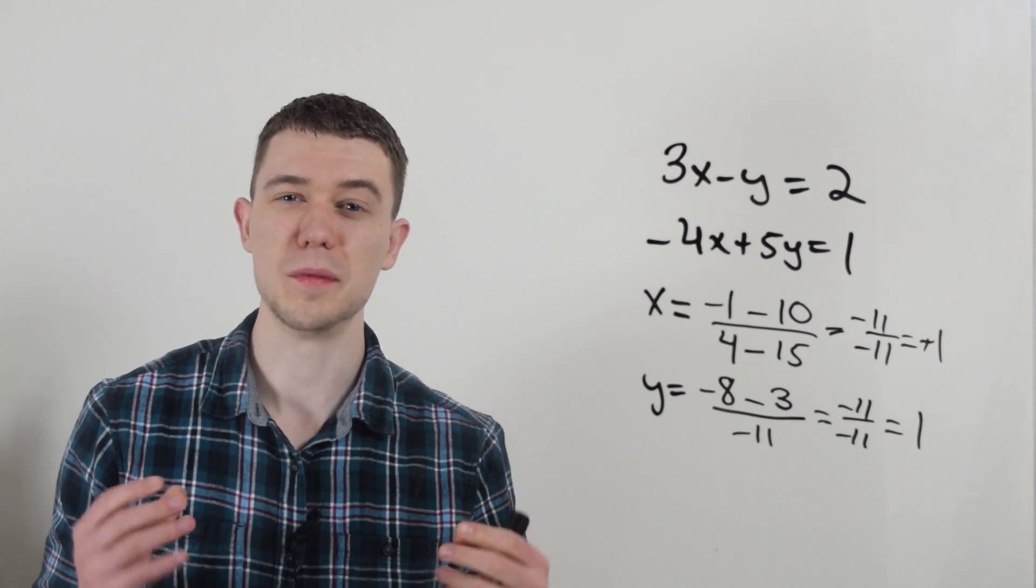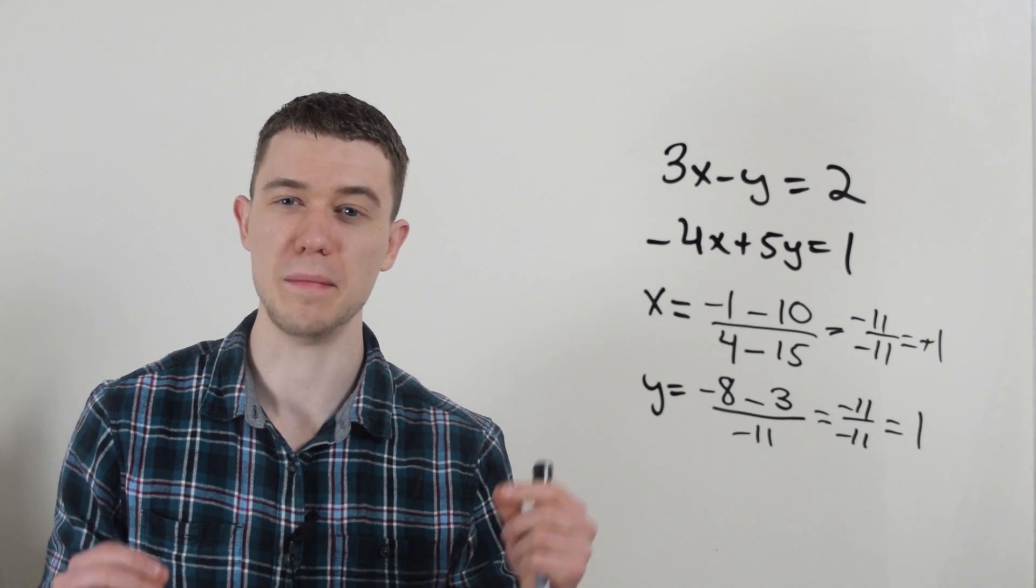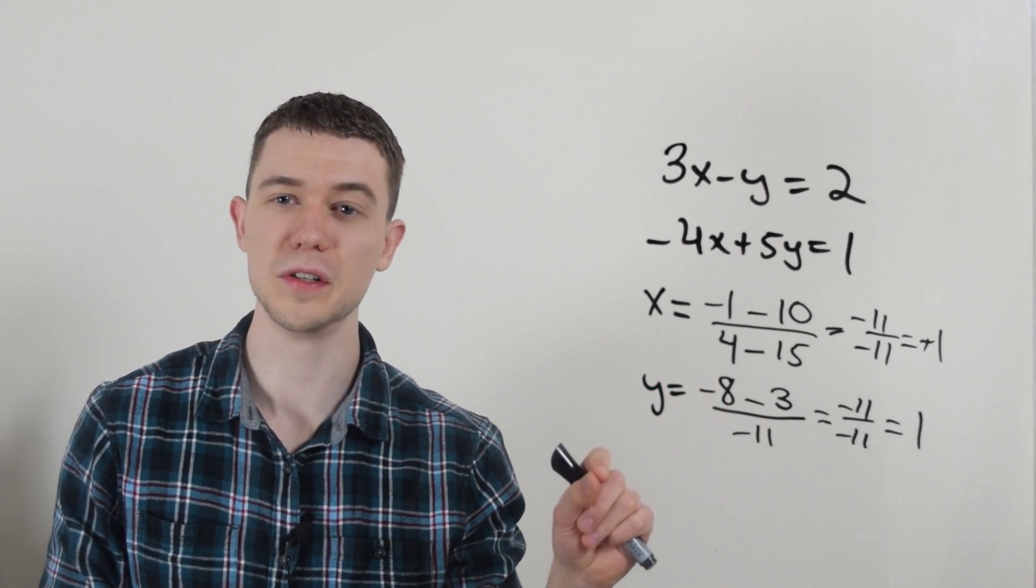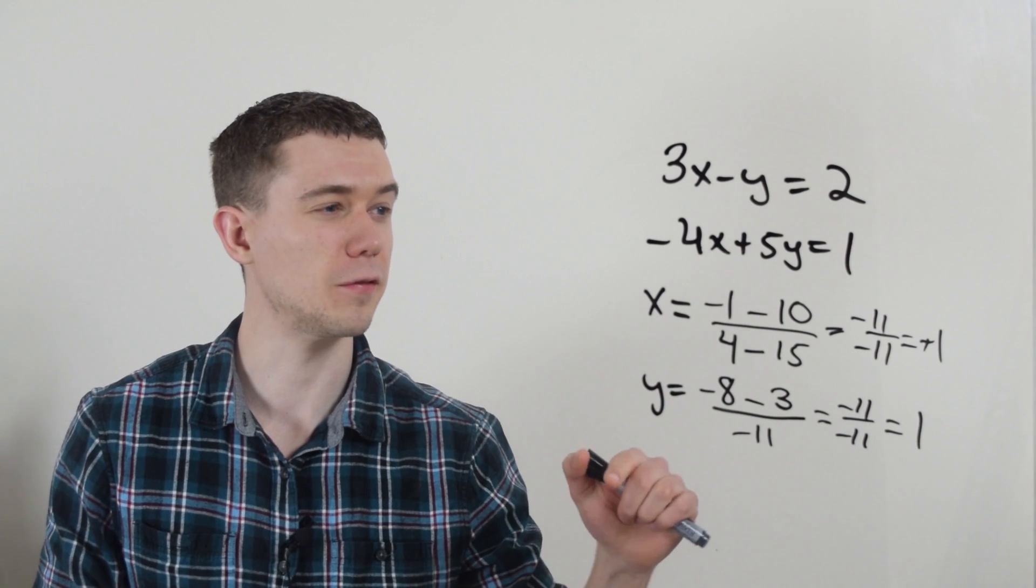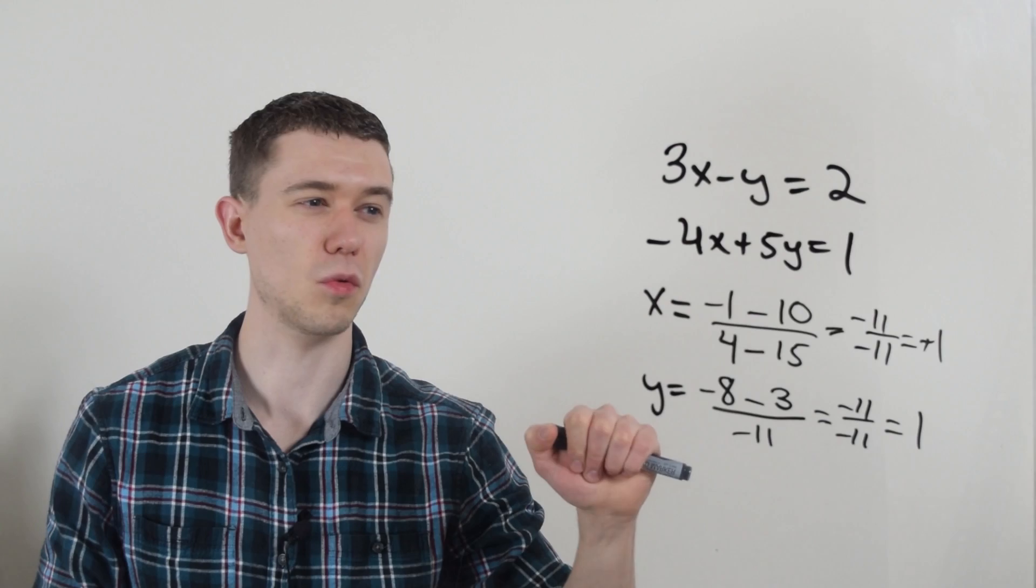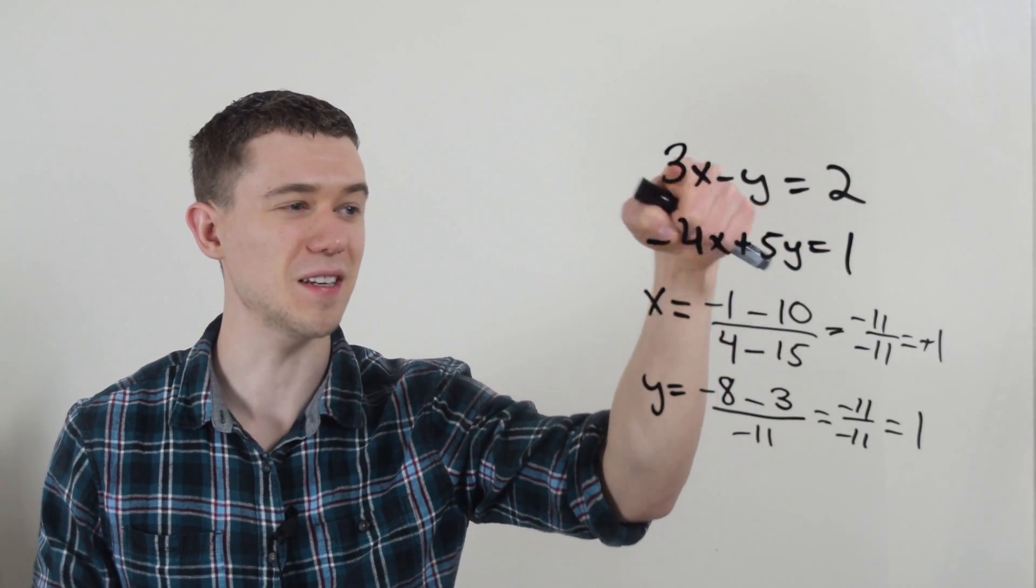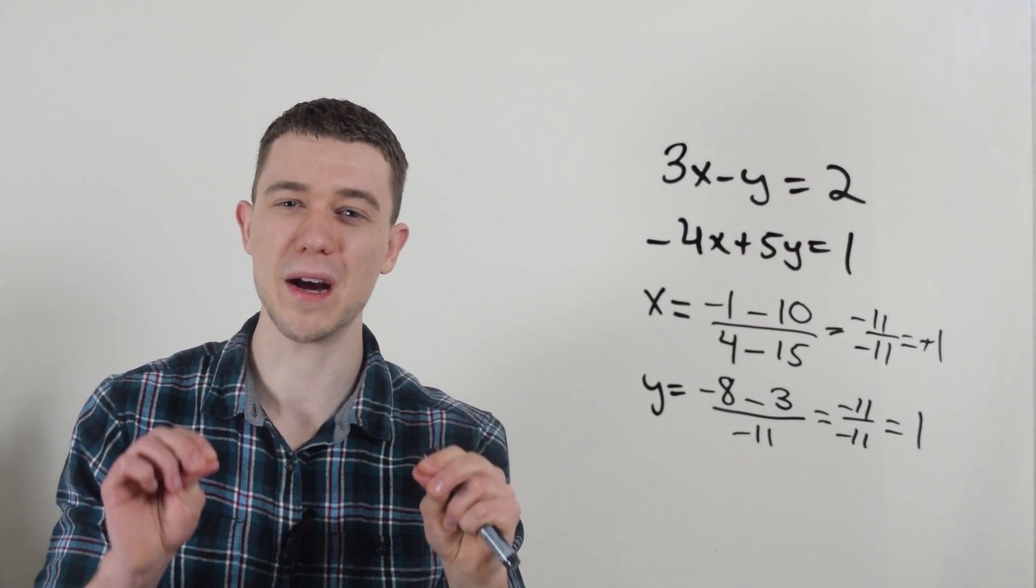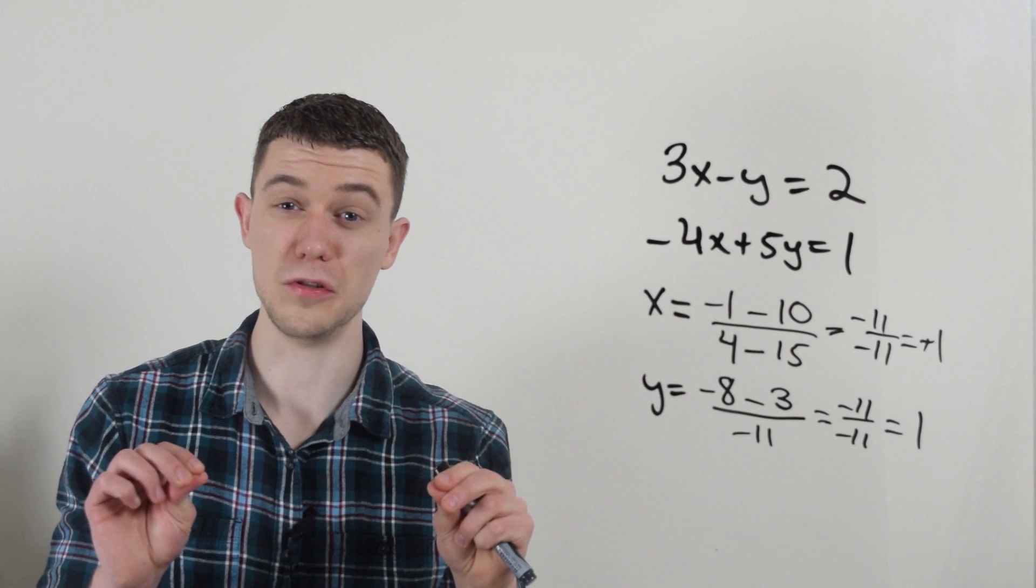Before you try this trick on your problems, make sure you have the ordering right. Make sure you know which numbers to multiply and when. When you're solving for x, it's this times this minus this times this. And when you're solving for y, it's this times this minus this times this. Make sure you have the ordering down for the numerators.